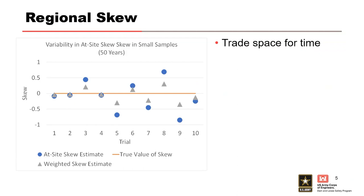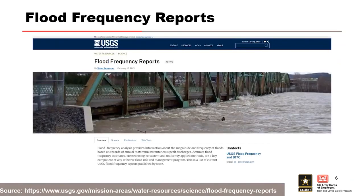In this example, including the regional SKU information moves the at-site SKU estimates closer to the true value in each trial. The blue points are the at-site SKU estimates in a 50-year record, the orange is the true value, and the gray triangles are the weighted SKU. Every time we added regional SKU to an at-site estimate, the weighted value is actually closer to the true value than the blue dot was itself. A recommended source of regional SKU studies is the USGS website for flow frequency reports, generally organized by state.